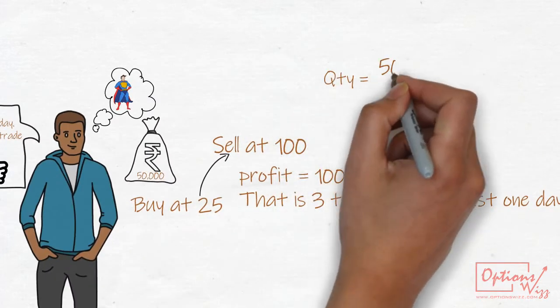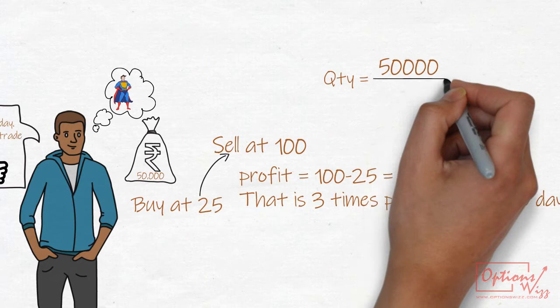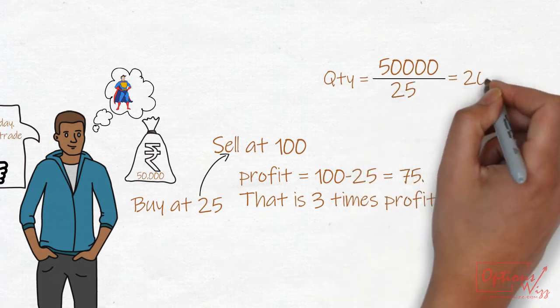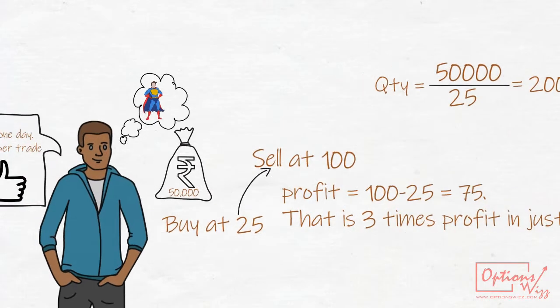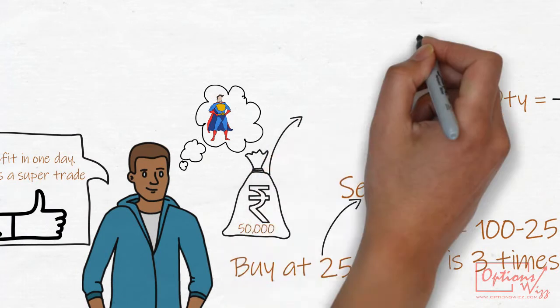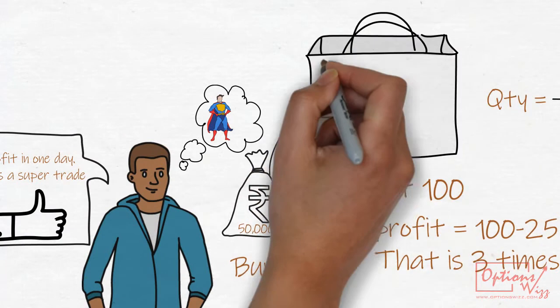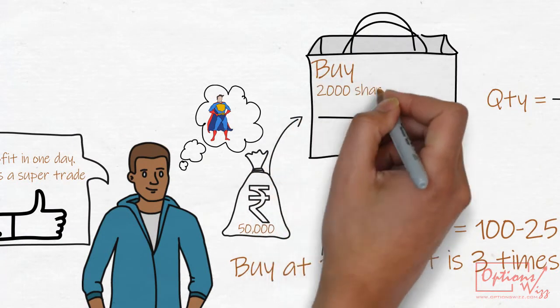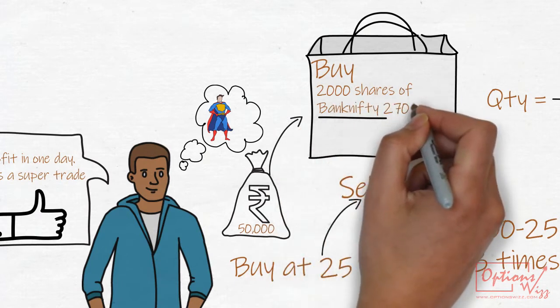He does another simple calculation and finds out the net quantity required to set up this trade. So Raj goes and buys 2,000 shares of Bank Nifty 27,000 call at rupees 25.